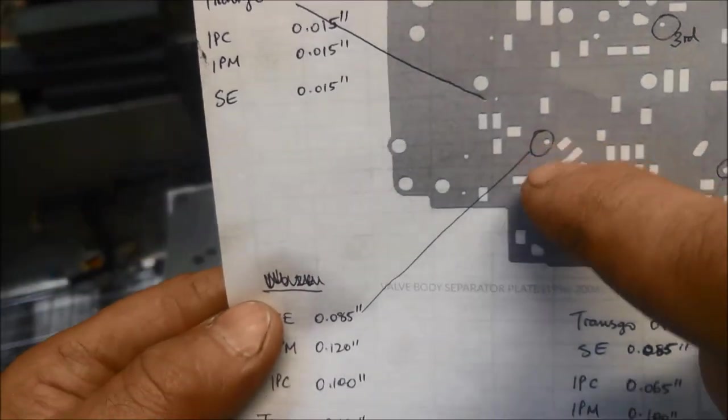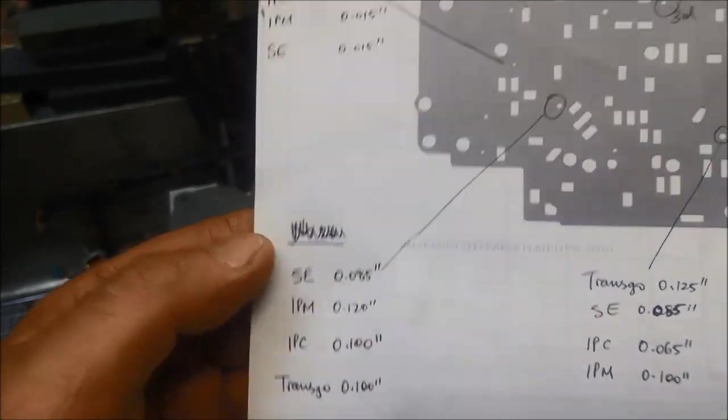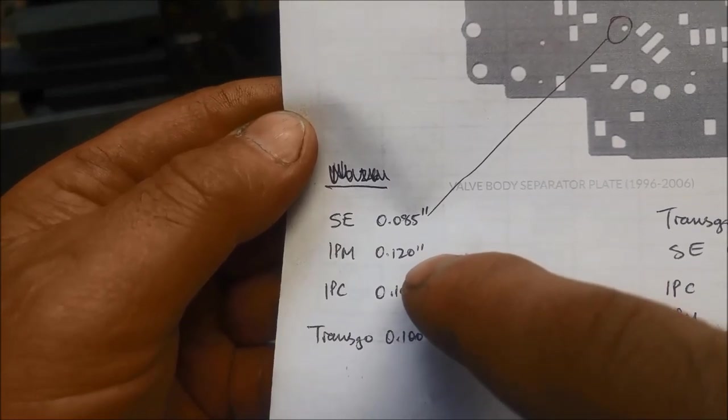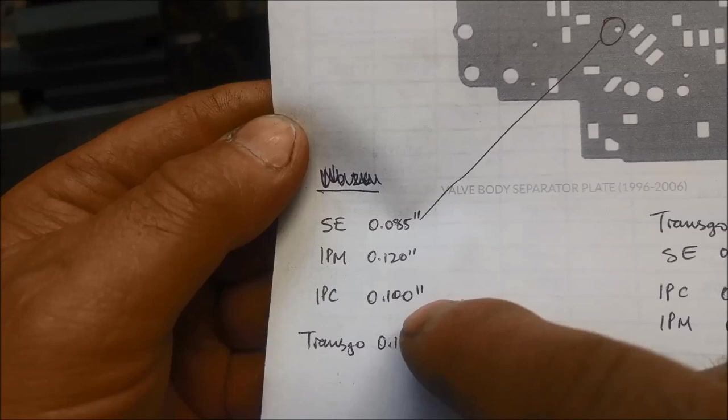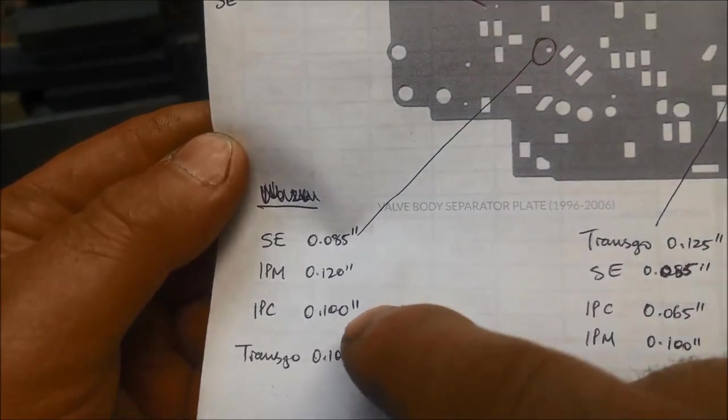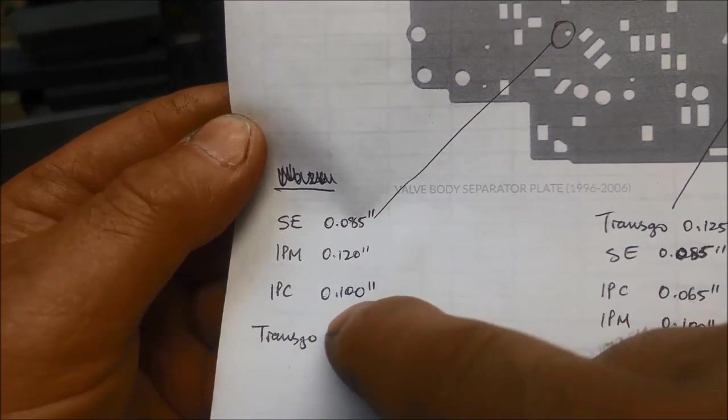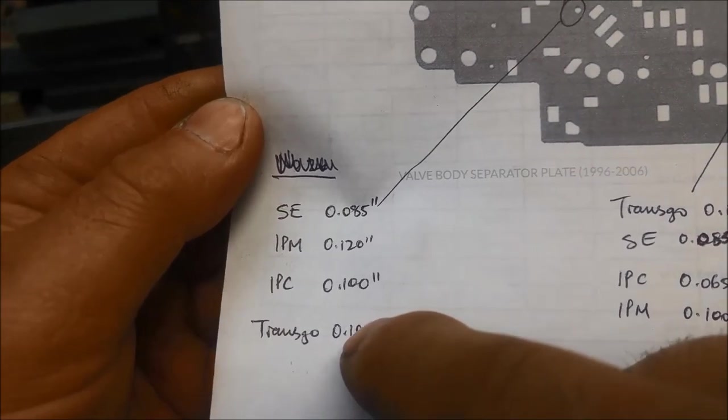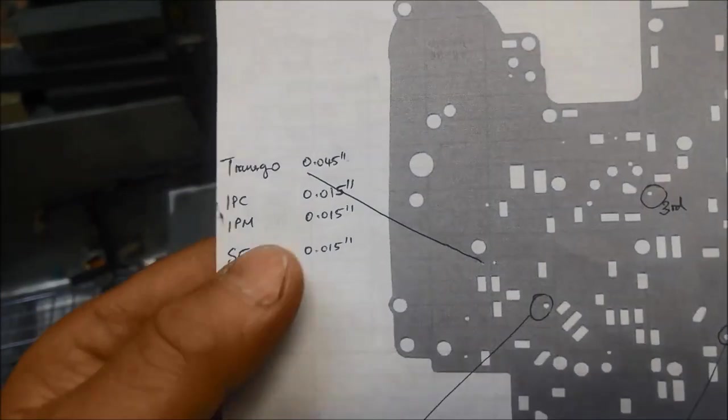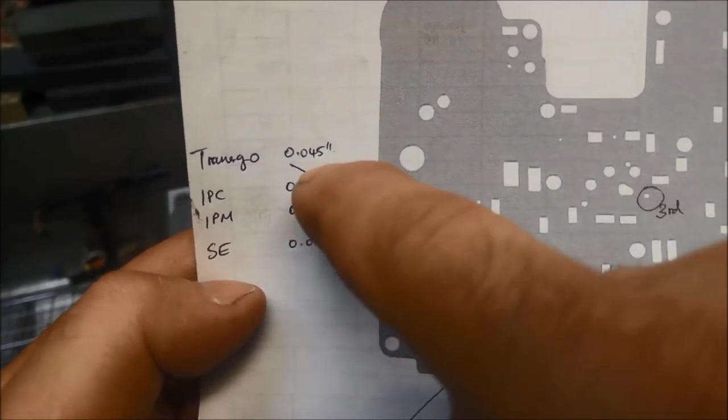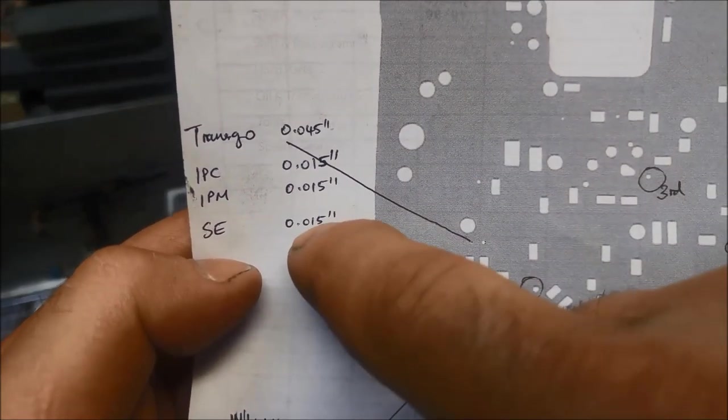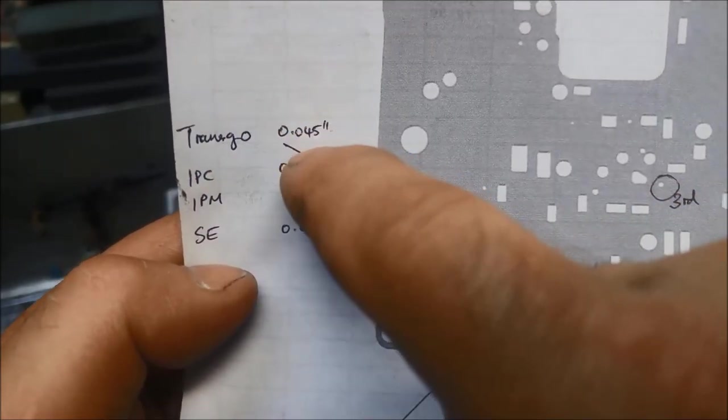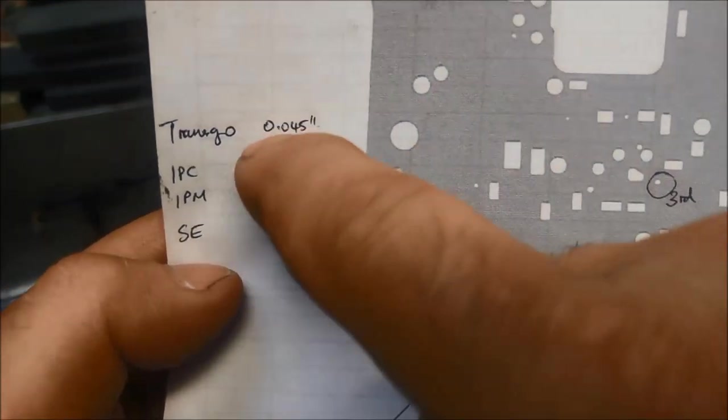And over here, this little hole. We've got the SE was 85,000, 120,000 on the IPM, 100,000 on the IPC. We might look at drilling that one out to 100,000. Oh, sorry, the IPC is already bigger, 15,000 bigger. So we're not going to touch that one. And the TransGo. And this one here, that little hole there. We've got the SE, which is 15,000, so we're the same on the IPC. You'll notice the TransGo. They tap them out to 45,000 there.